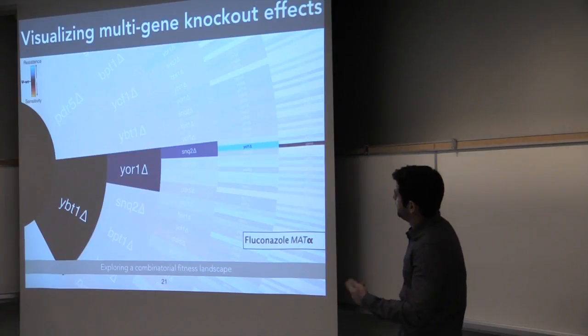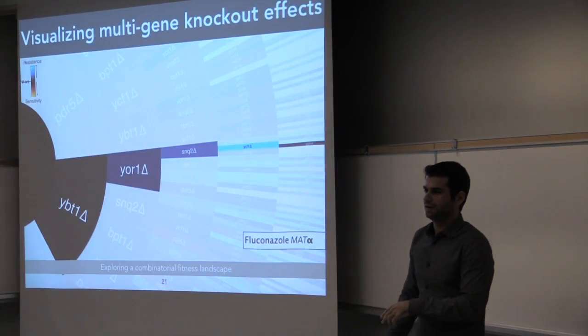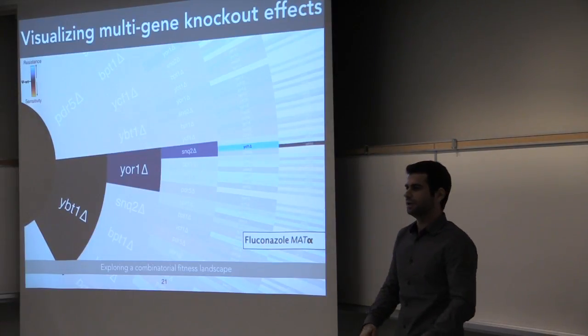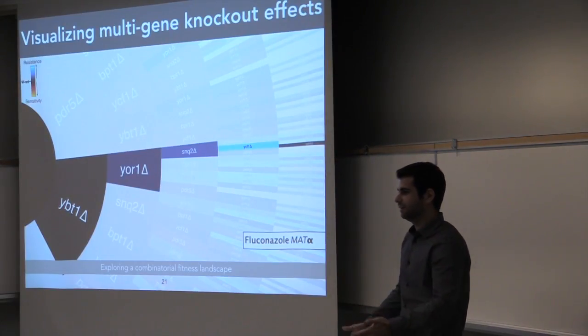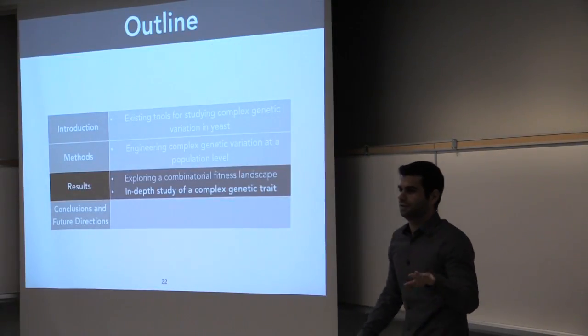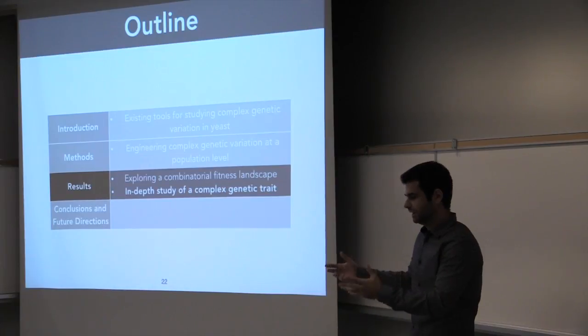And what we found is that making any combination of one, two, or three knockouts gives you very little resistance, whereas a four-gene deletion makes you highly resistant. But then if you further knock down a fifth gene, you're back to where you started from. So now I'm just going to look at this trait more in depth.